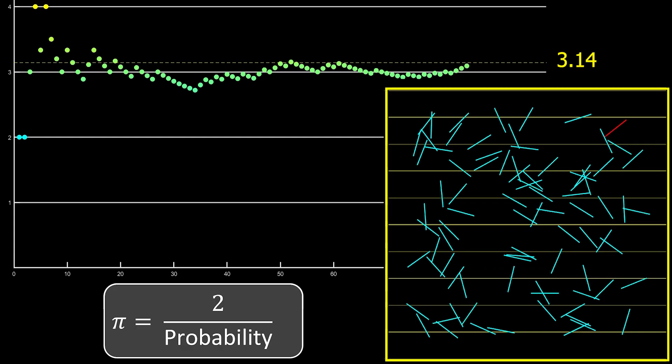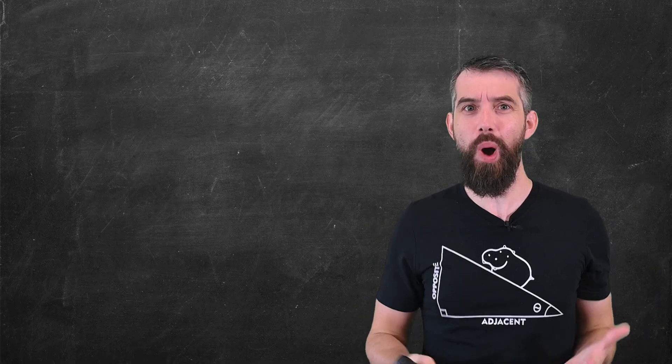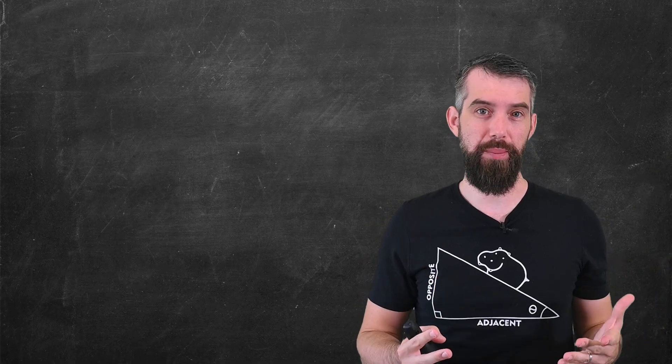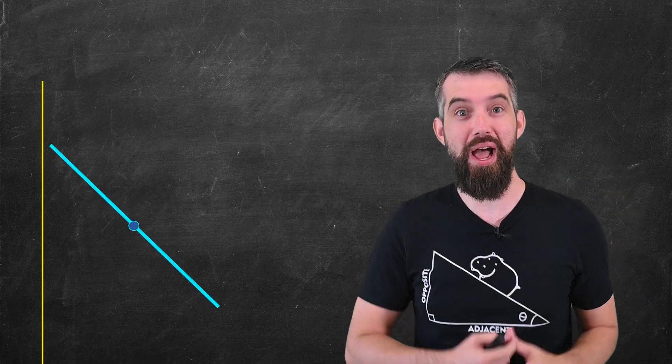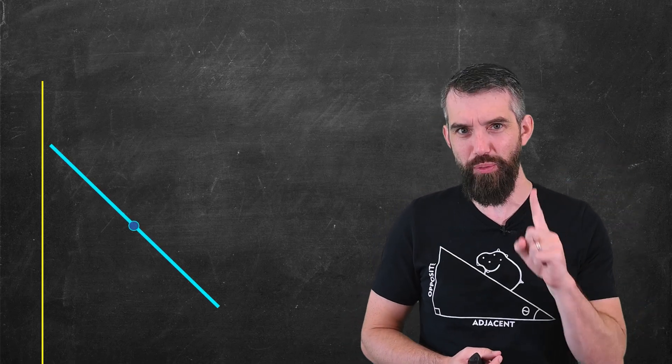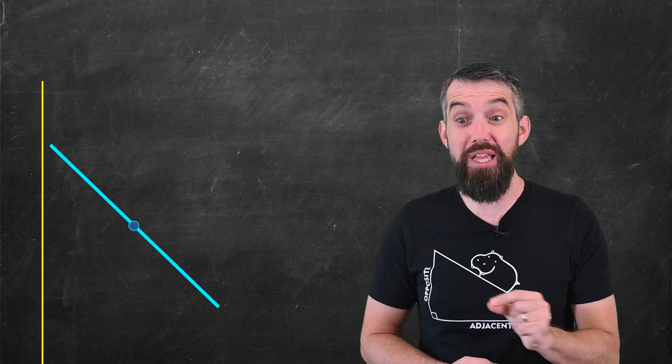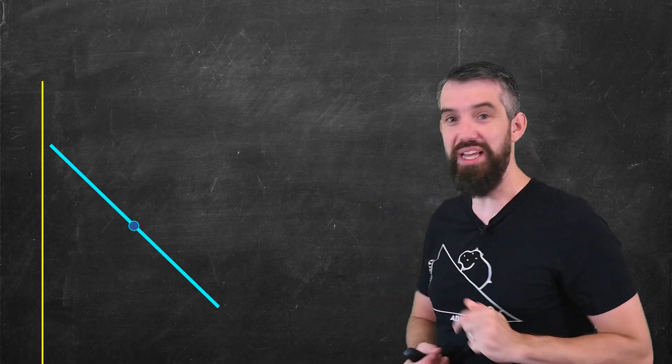And I can let the program run to a million toothpicks if I wanted to. But why? Why does this formula work? Suppose this is one of the vertical lines that I'm going to hit and let me drop my blue needle at a random spot.